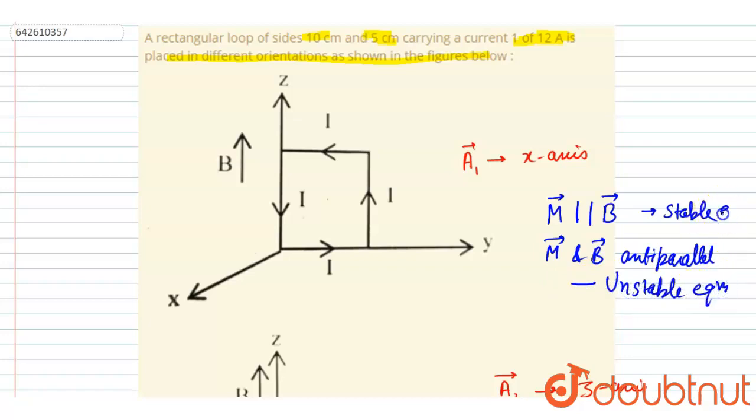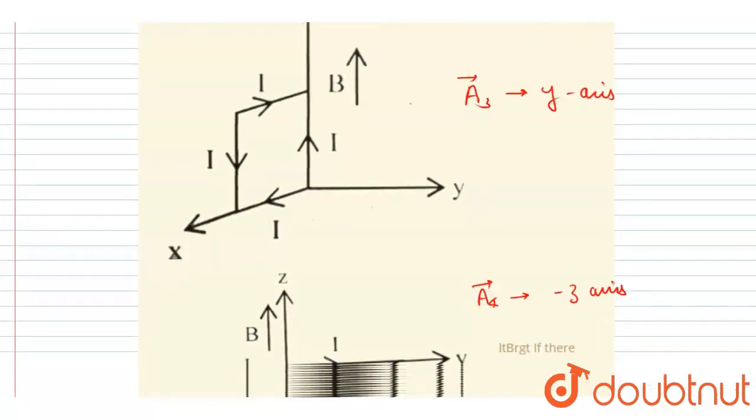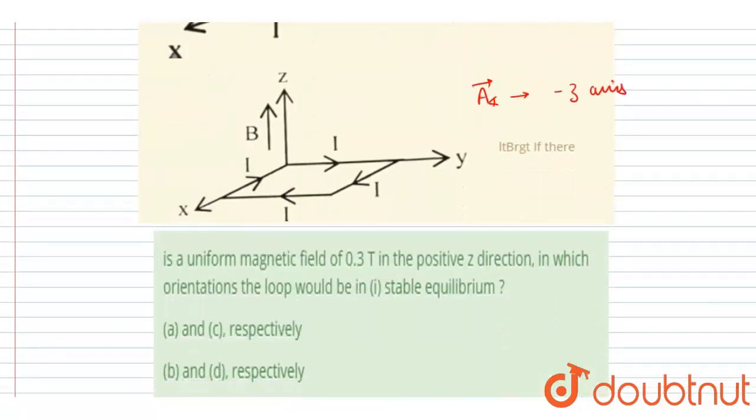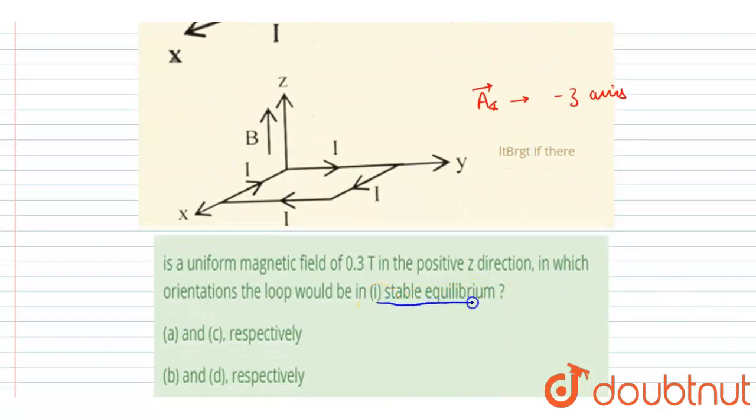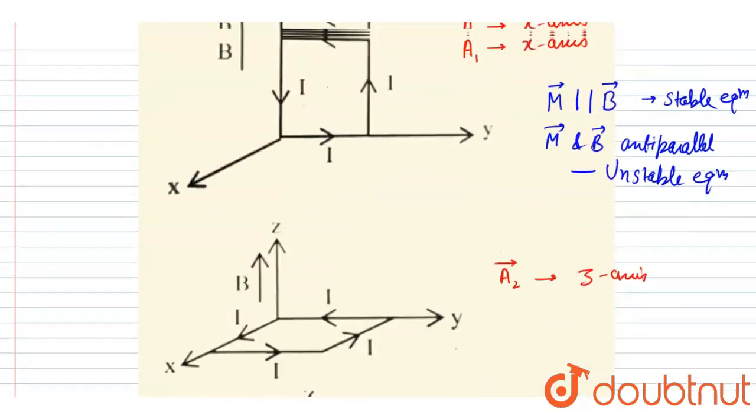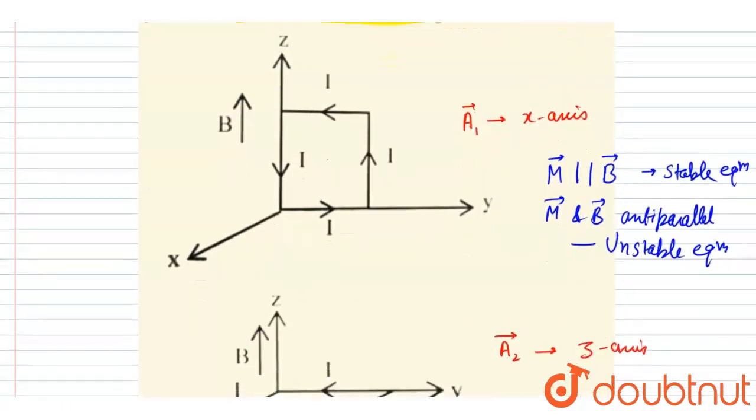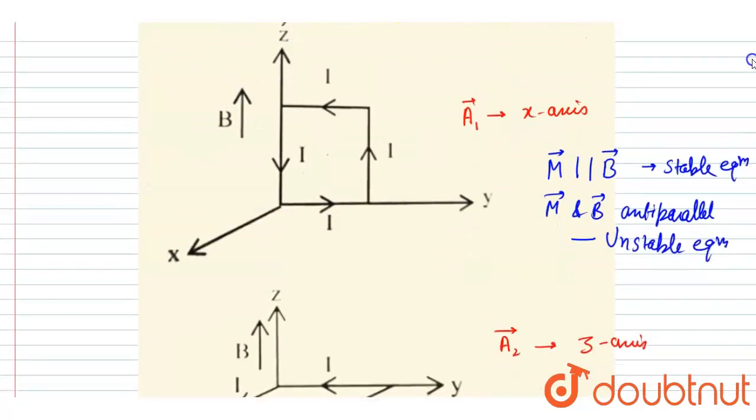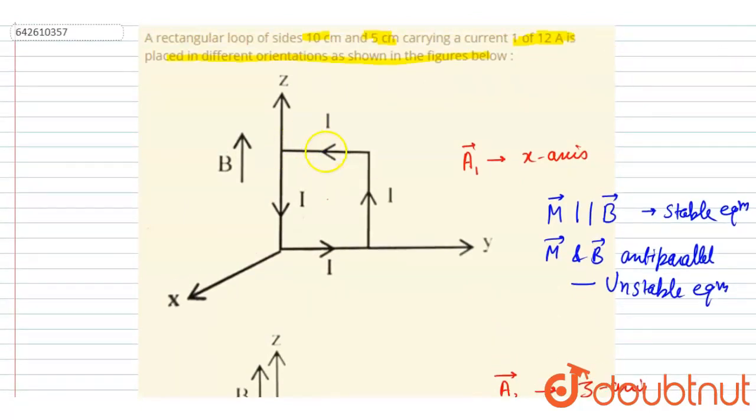In the question it is asked: in which of the diagrams is stable equilibrium possible?